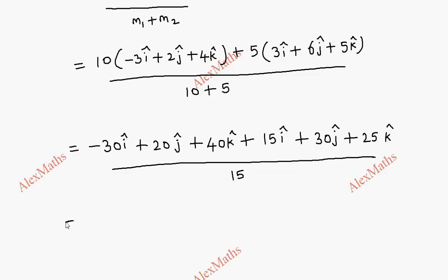This is the i term. So we have minus 30i plus 15i cap, total combined minus 15i cap. Then j term combined, 50j. Then 65k cap, whole divided by 15.